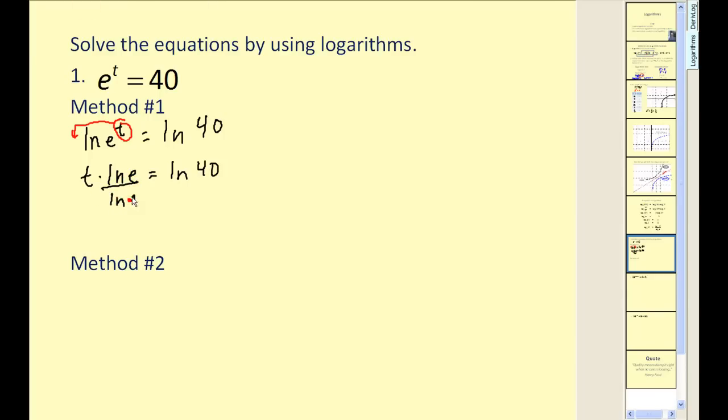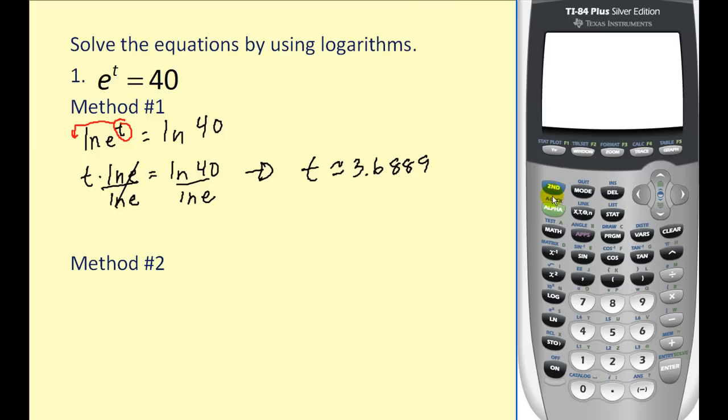Now natural log e is actually equal to one because the base and the number are the same. But just in case we didn't remember that, we could still divide by natural log e, basically isolate the t. This would simplify. And so I would have t is equal to natural log 40 divided by natural log e. But of course, this is equal to one. If we evaluate the natural log of 40, we'll get approximately 3.6889, and it's pretty common to go to four decimal places. Of course, we could easily check this. What we're saying is if we take e, raise it to the power of 3.6889, we should get approximately 40. And we do. It's a little bit off, of course, because this is rounded.